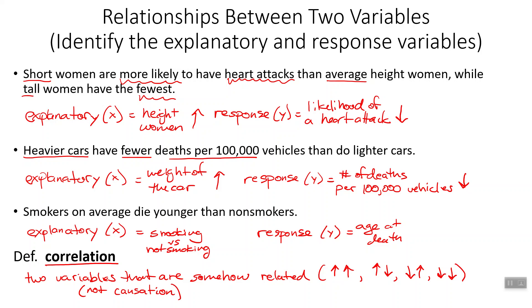There's a whole book called Spurious Correlations — they could have no causation whatsoever. So they're not causing each other; we're just saying they're somehow related. It could just be completely by chance.